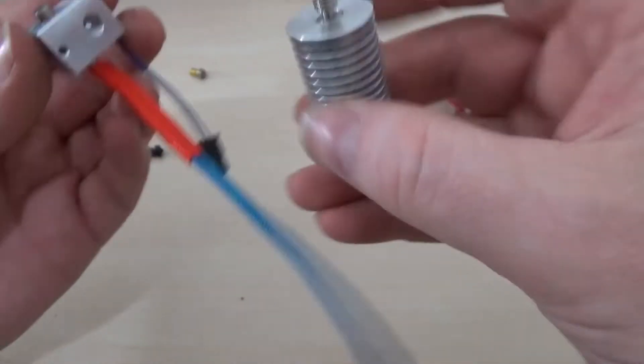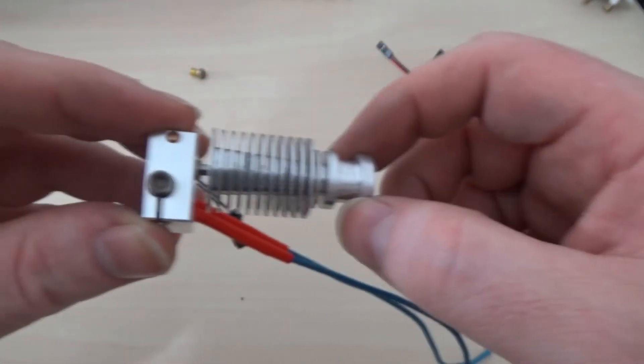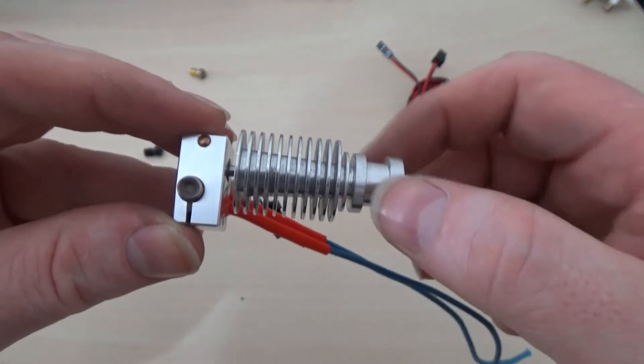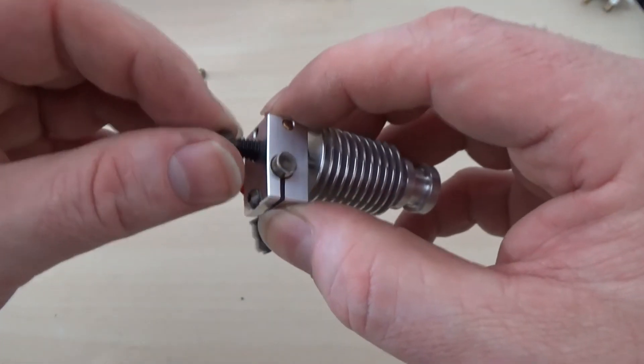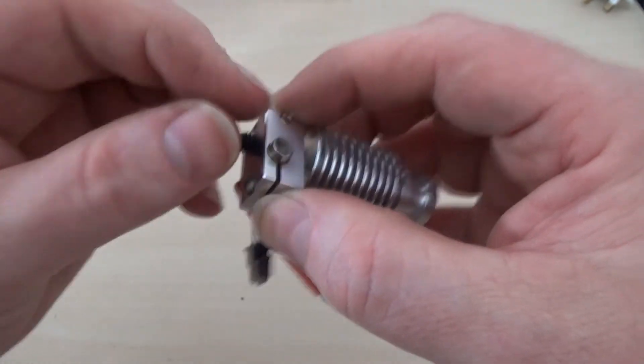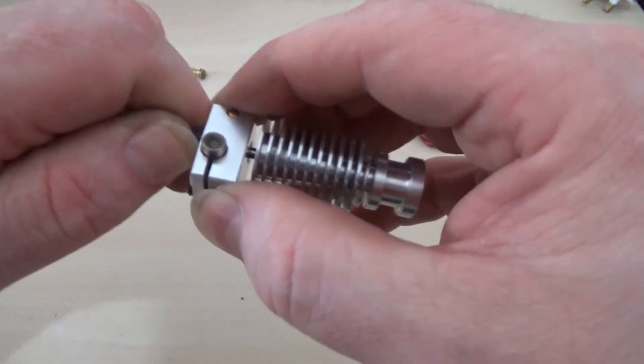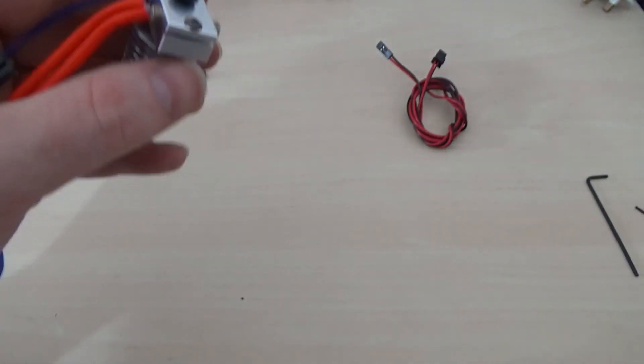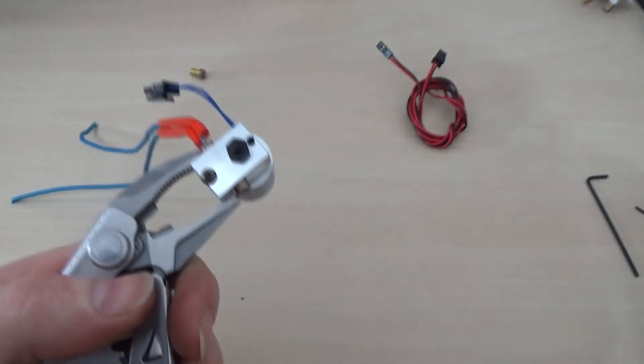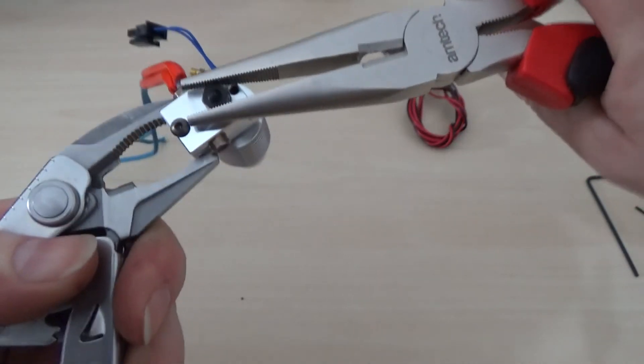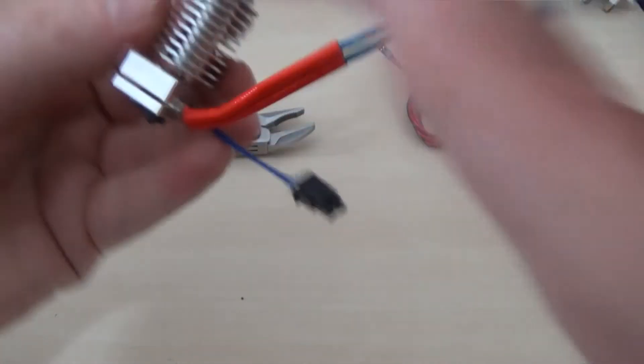Now take your heat sink, screw that back into there, until the heat break is in line with the top of the heater block. I think that's it. And then you take your new, in this case our new hardened nozzle. Screw that in. Grip that with this mold grip. And then just snug that up. And that's it.